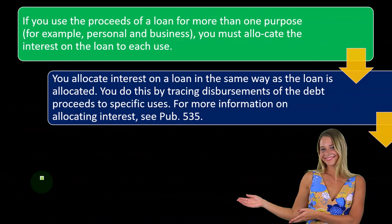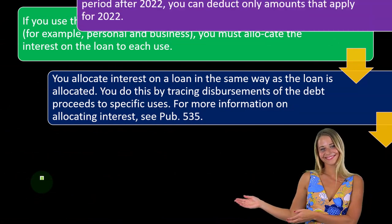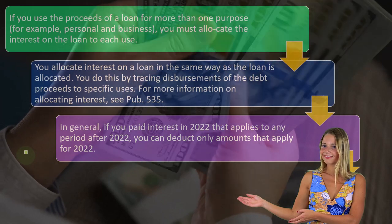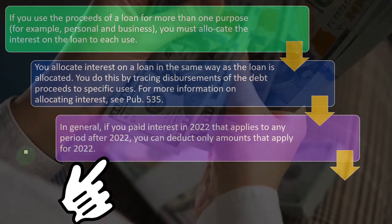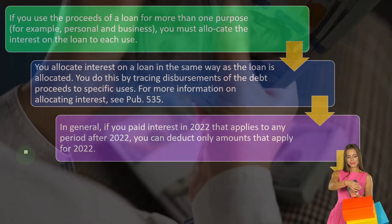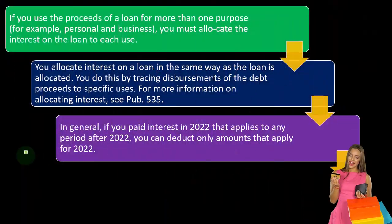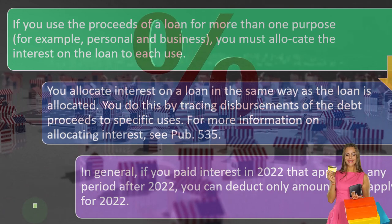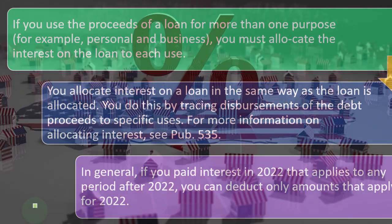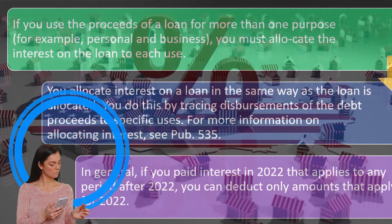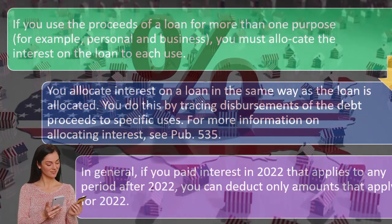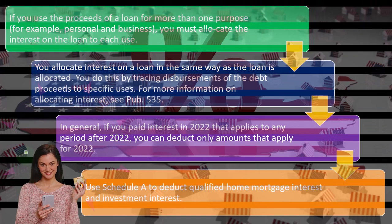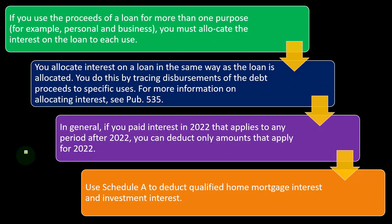The general concept would be: if you took out a $100,000 loan and paid 40% for business use and 60% for personal use, you'd use those same ratios on the interest payments. For more information, see Publication 535 on allocating interest. Also, if you paid interest in 2022 that applies to any period after 2022, you can deduct only amounts that apply to 2022. In a cash-based system, people might try to prepay all the interest to get more deductions upfront, but the IRS will limit prepayment. Make sure to check if you can do that before making a big prepayment to lower taxes.